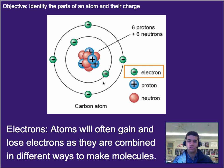Now, atoms will often gain and lose electrons as they're combined in different ways to make molecules. And this is actually what changes the charge of an atom. So when we have a balance, we can see here only four protons, and we can see that there are one, two, three, four, five, six electrons. So this doesn't look like it's perfectly balanced in terms of charge, but there might be a proton hidden in there.